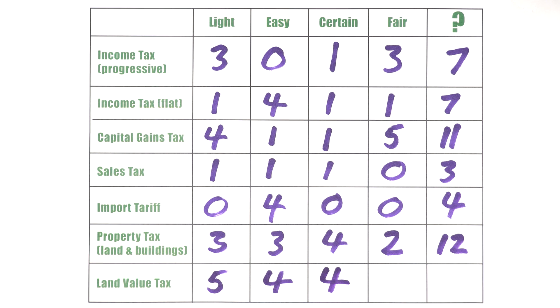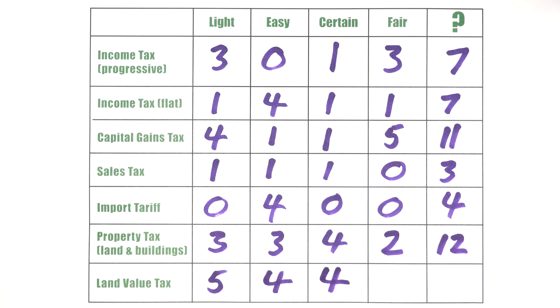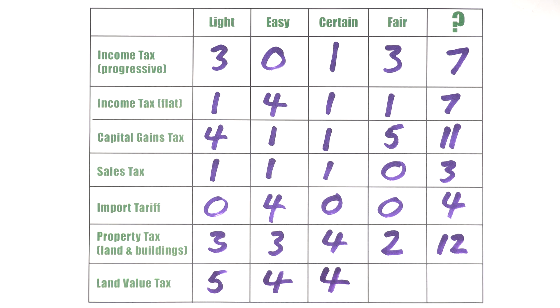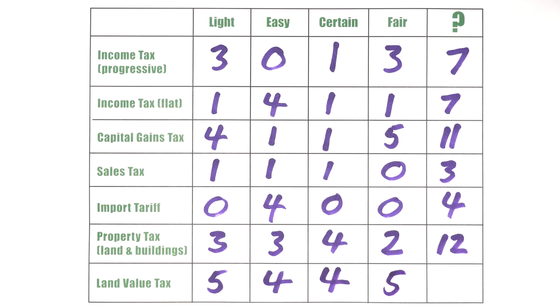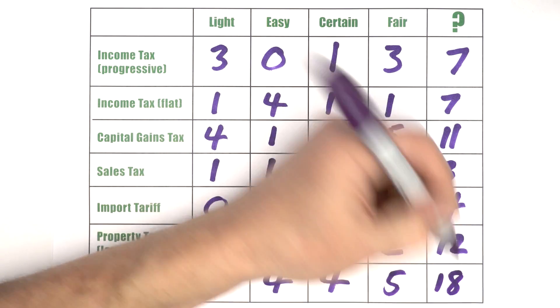And is it fair? Well, according to the benefits received principle of taxation, a land value tax is merely collecting from the land holder the income or the value of the benefits received on that site where they're producing. So it's incredibly fair. That gives it an overall score of 18 in the canons of taxation sweepstakes. According to Adam Smith's canons of taxation, the land value tax is clearly our winner.